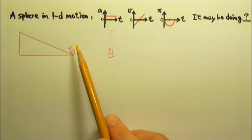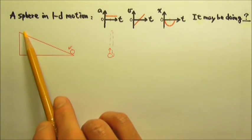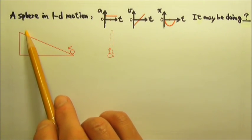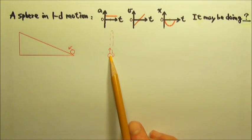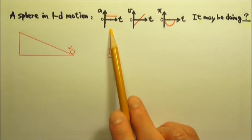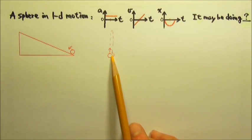The sphere can be rolling without slipping up an incline to a maximum height and then roll without slipping back down. Or the sphere can be tossed straight up to a maximum height and then falls back straight down.